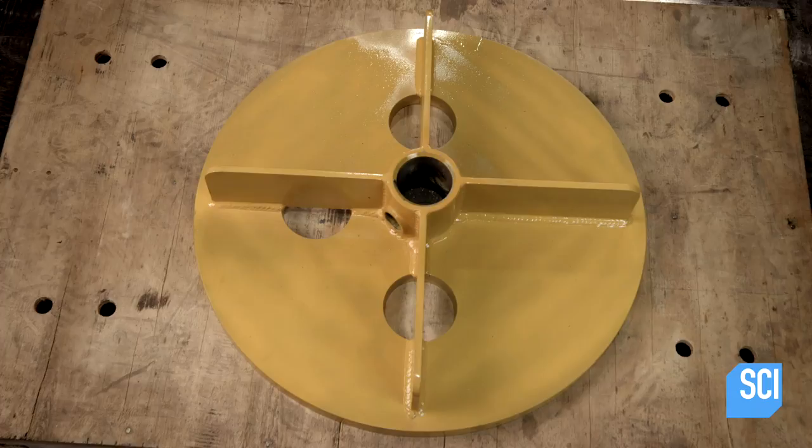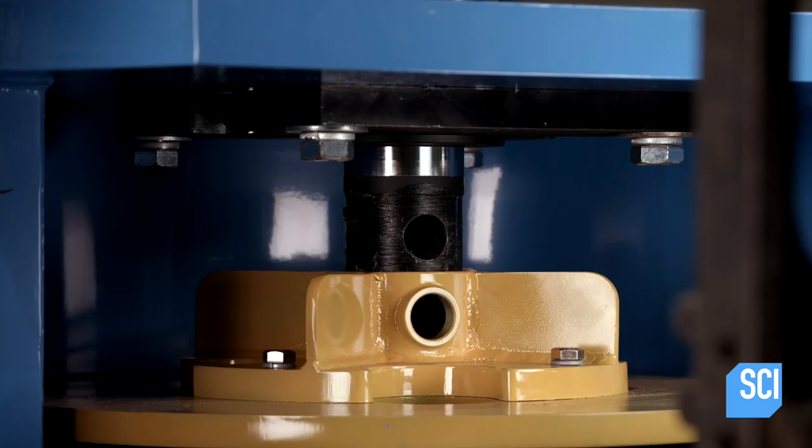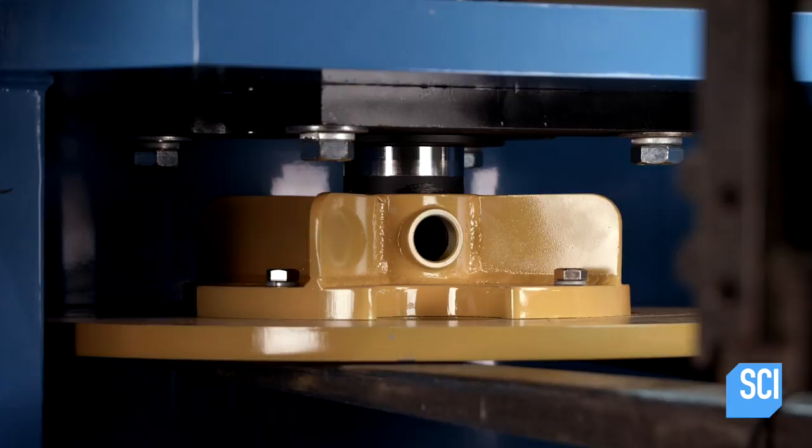The substantial and hefty crusher head is next. Using a forklift, workers maneuver it into position on the shaft and then secure it with a thick steel pin.